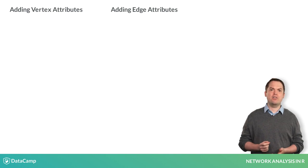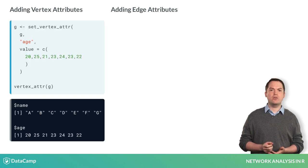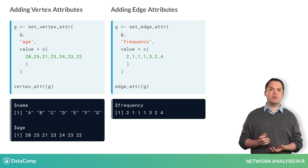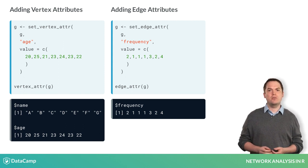To add these attributes directly to networks that already exist as iGraph objects, you can use the functions set_vertex_attribute and set_edge_attribute. The first argument to each is the graph object. The second argument should be what you wish to call the new attribute. The final argument are the values to include. Here we are adding a vertex attribute called ages and an edge attribute called frequency.